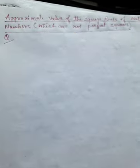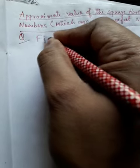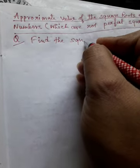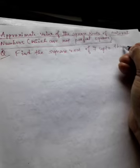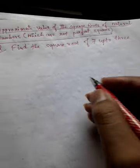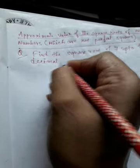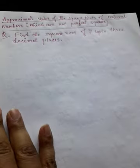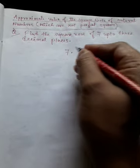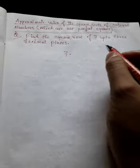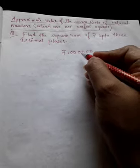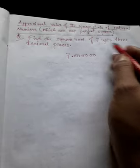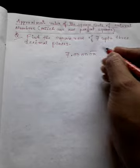The first question is: find the square root of 7 up to three decimal places. We have to take 7 and since we need three decimal places, we take one point and then three pairs of zeros — one pair, two pair, three pair — that is six zeros. Three decimal places means three pairs of zeros. Now find the square root; these are the periods.